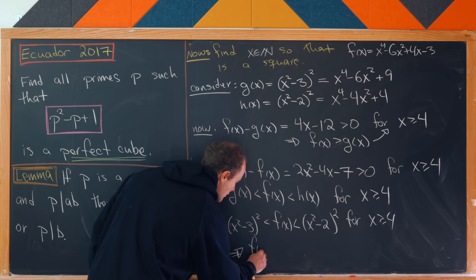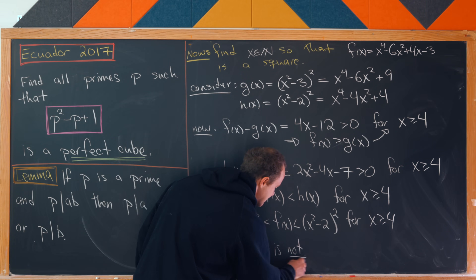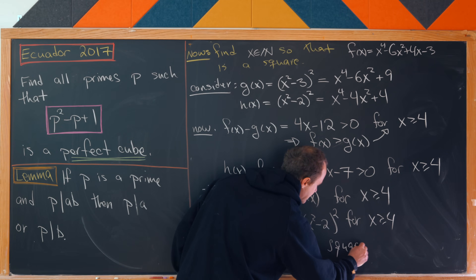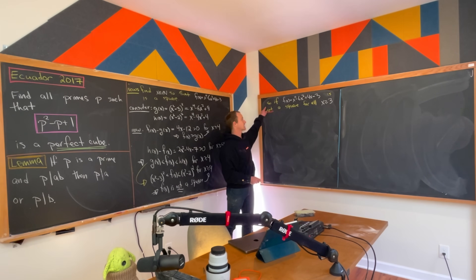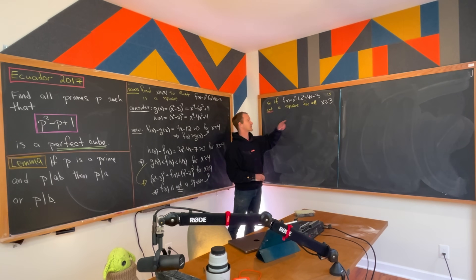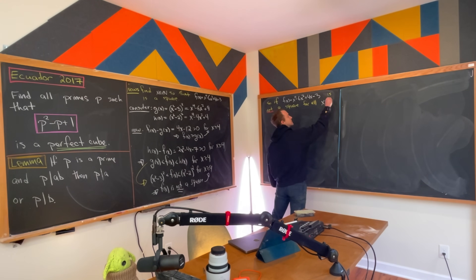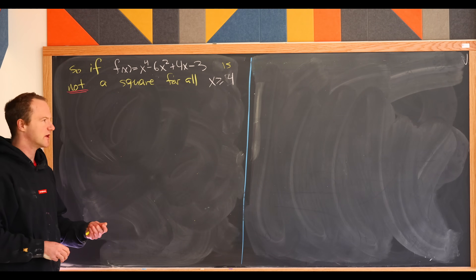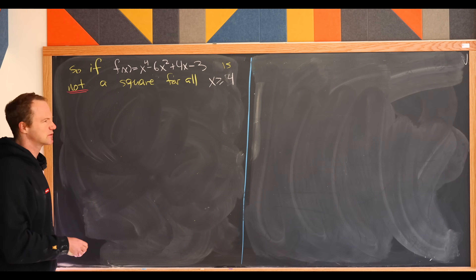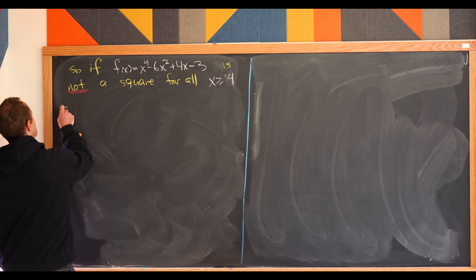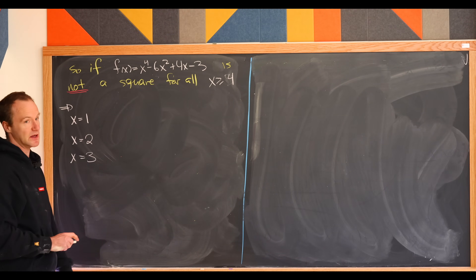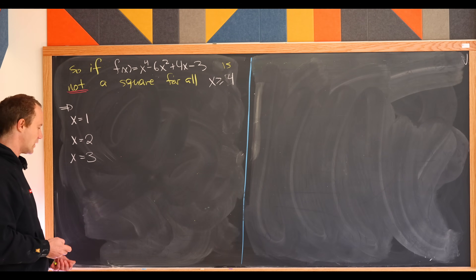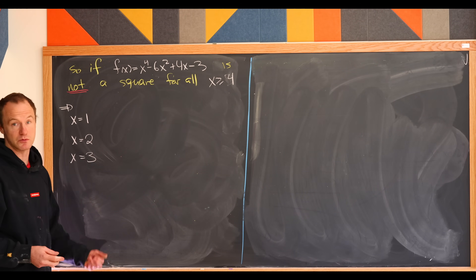Therefore f(x) is not a perfect square for any x greater than or equal to 4. Since x is a natural number, we're only left with three possibilities: x equals 1, x equals 2, or x equals 3. Those are manageable to check by hand.